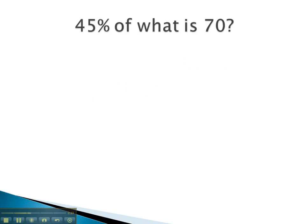Here we're asked, 45% of what is 70? Translating first, 45's already a number. Percent, that's our 0.01. Of is multiplication. What, that's our variable. Is becomes our equal sign. And 70 is already a number.